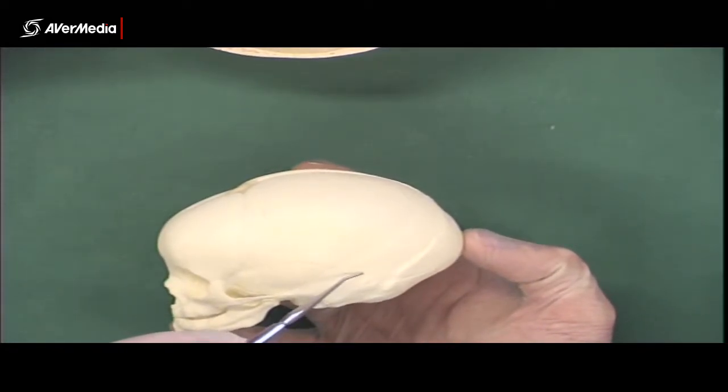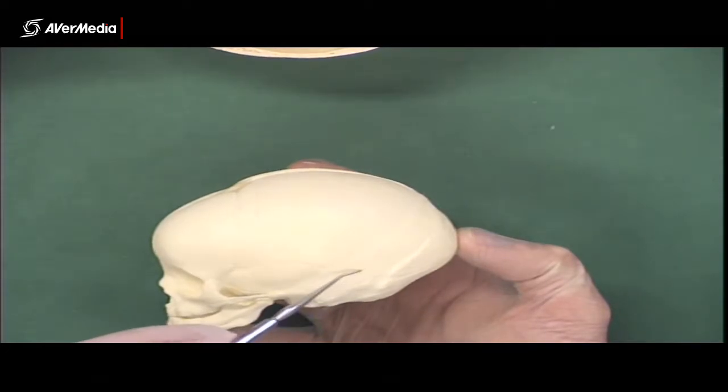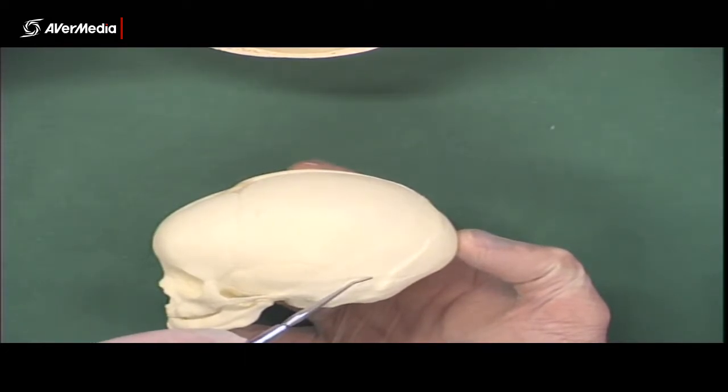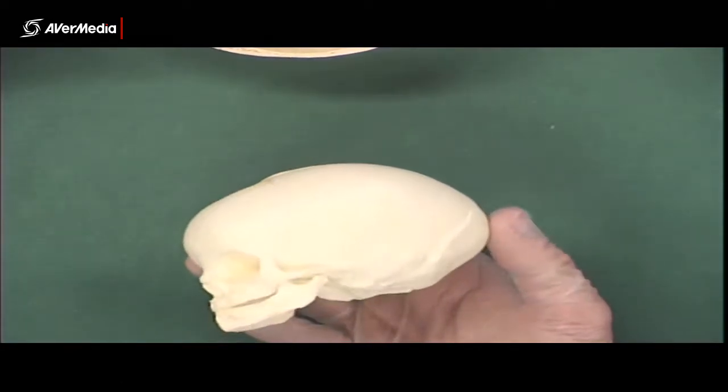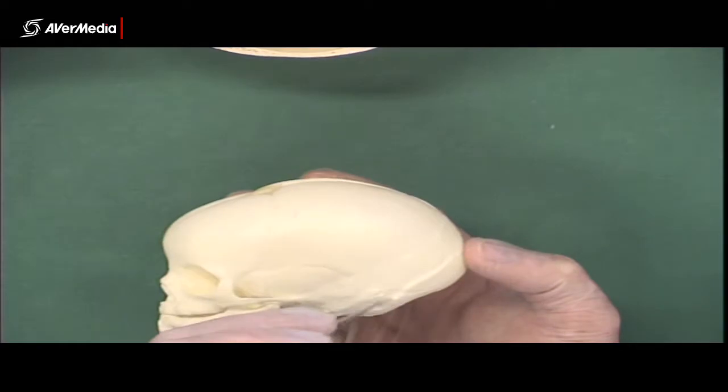Out here there should be a mastoid fontanelle and here there should be a sphenoid or sphenoidal fontanelle, and again those ones not really shown clearly on the model.